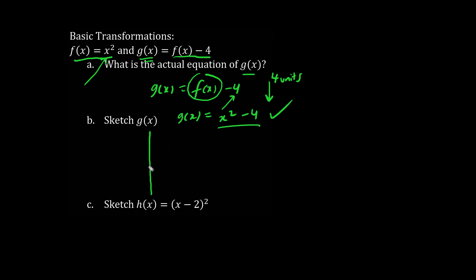Now let's sketch this. We shift down 4 units. So the parabola used to look like this, but now that we're going down 4 units, it looks like this. And by the way, the x-intercepts are positive 2 and negative 2.